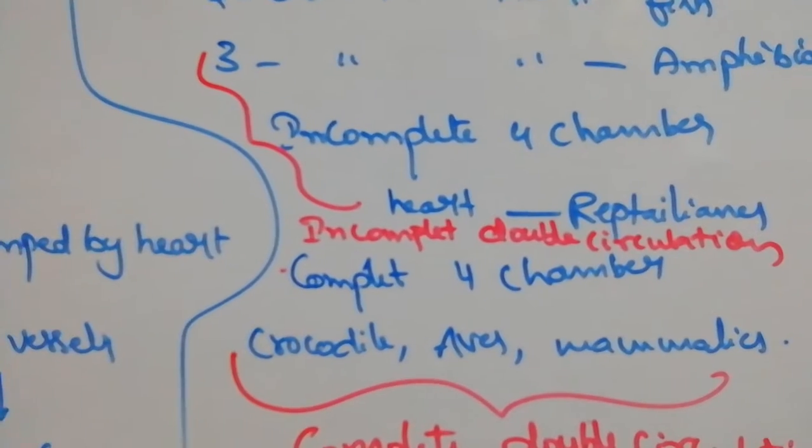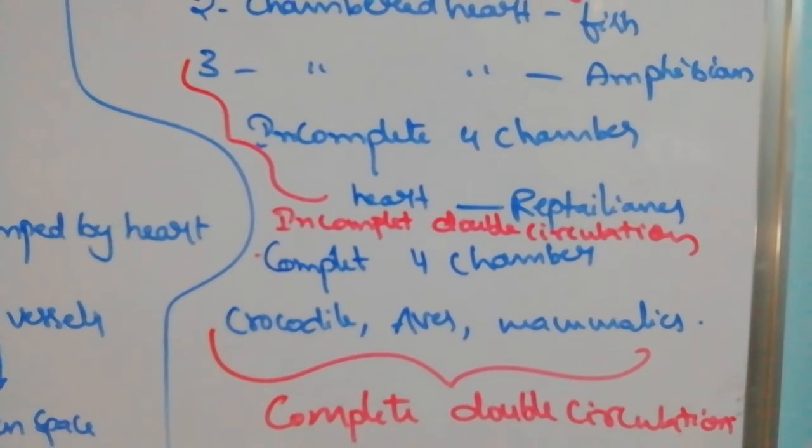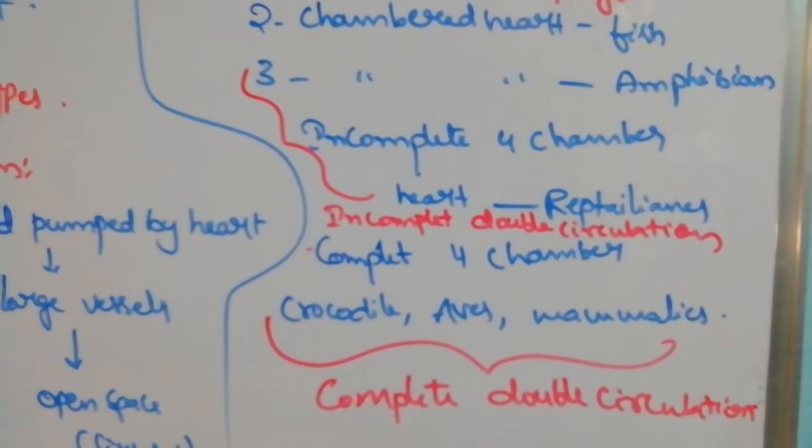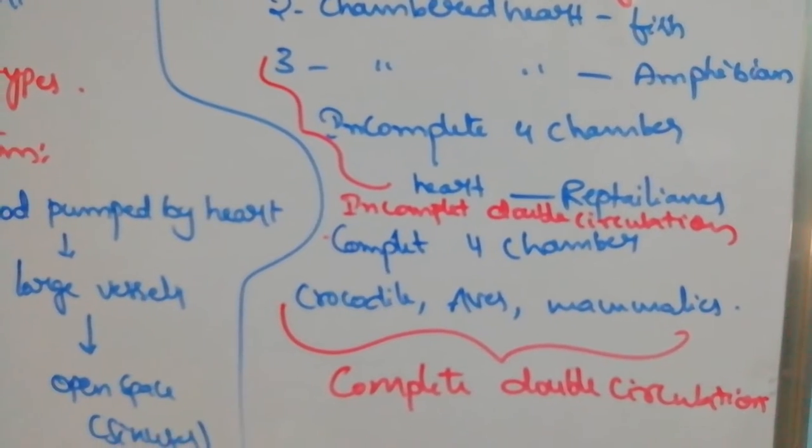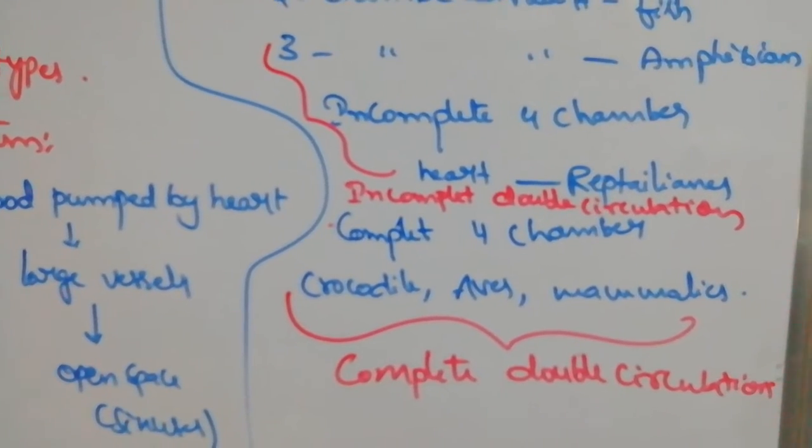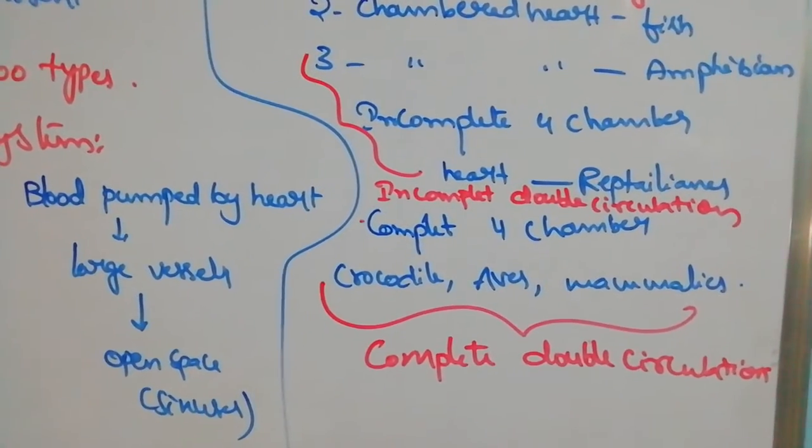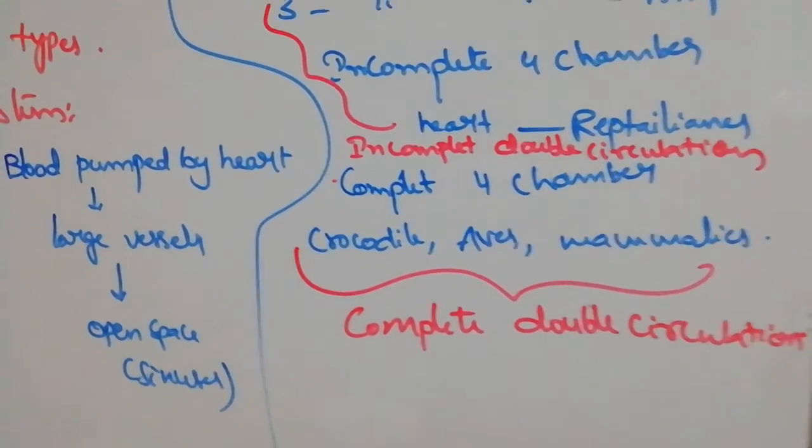Which type of circulation is present? Incomplete double circulation. Complete four-chambered heart is present in crocodiles, birds, and mammals. Here right is for deoxygenated and left is for oxygenated blood.